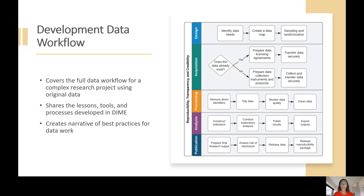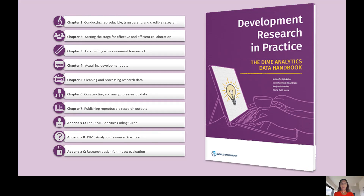The handbook's seven chapters follow that data workflow. Chapter 1 outlines a set of ethics and practices to ensure that research is transparent, reproducible, and credible. Chapter 2 focuses on structuring data work for effective collaboration while ensuring the privacy and security of research participants. Chapter 3 turns to the measurement framework, how to translate research design to a data work plan, and how to reproducibly and credibly implement sampling and treatment assignment.